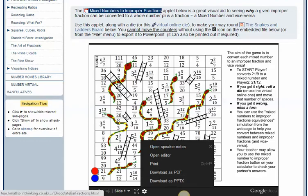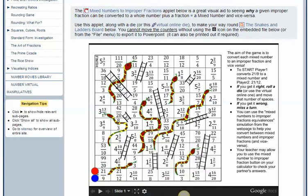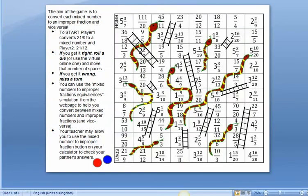So here's the name of the game. I start either on 21 ninths or 21 twelfths, and I have to convert them into mixed numbers.